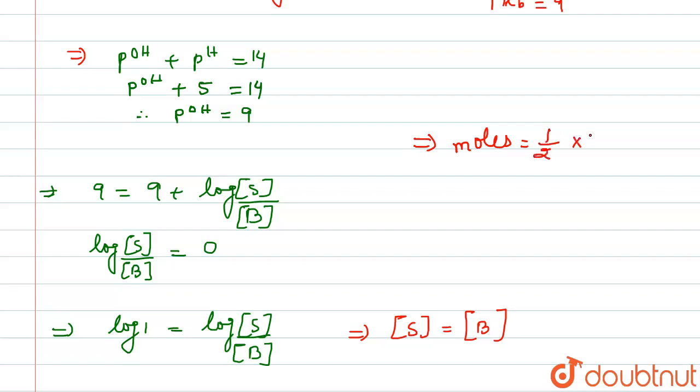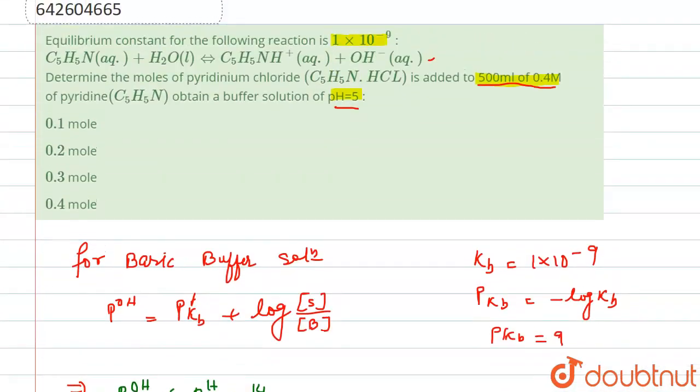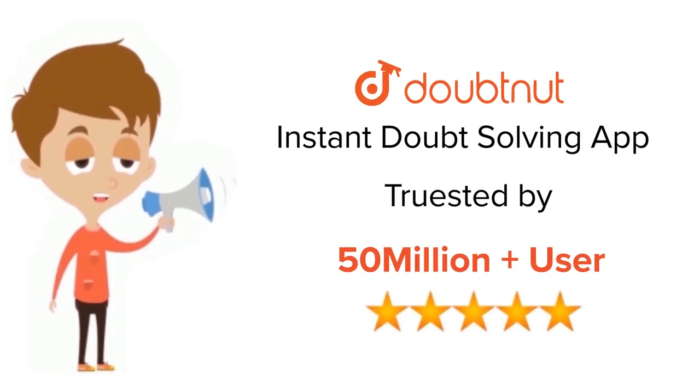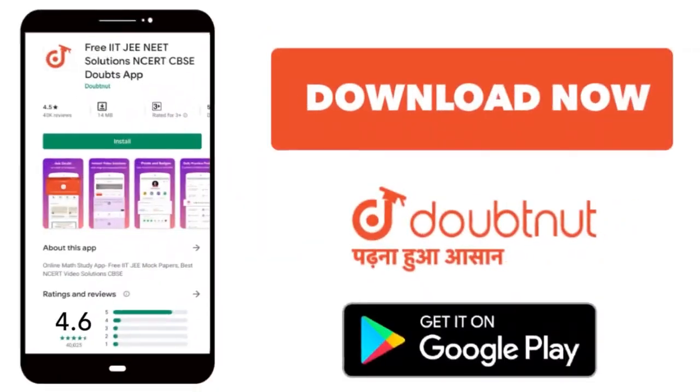Let us check the option and it is 0.2 right here, so the correct option is B. For class 6 to 12, IIT-JEE and NEET level, trusted by more than 5 crore students, download Doubtnet app today.